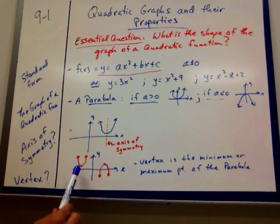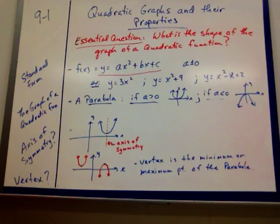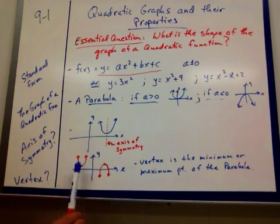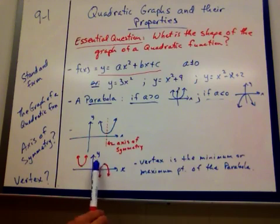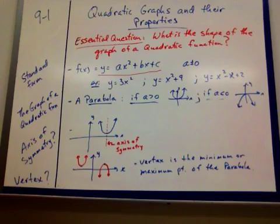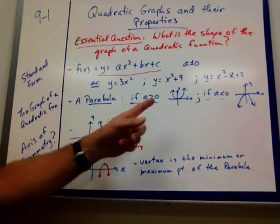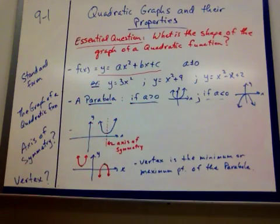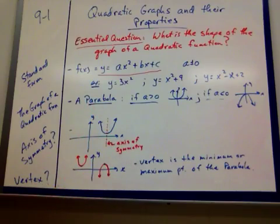Vertex. The vertex is that minimum or maximum point of the parabola, and you'll find that the axis of symmetry goes right through it. Here you can see it's a minimum because it's at the bottom. Here, the vertex is at the top, so it would be a maximum point. So the standard form of a parabola — the graph of a quadratic — has the axis of symmetry and the vertex.